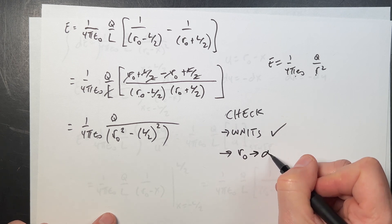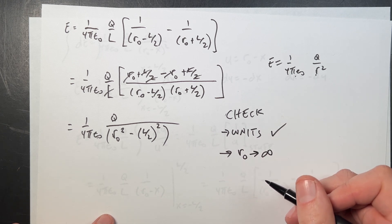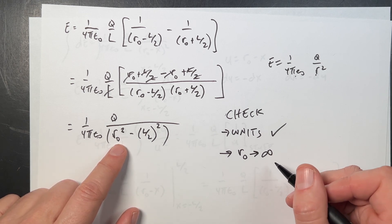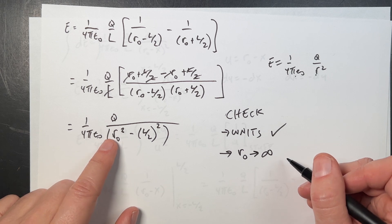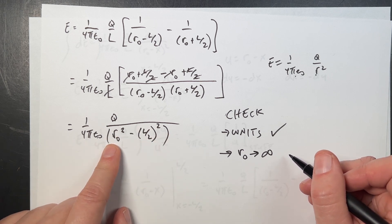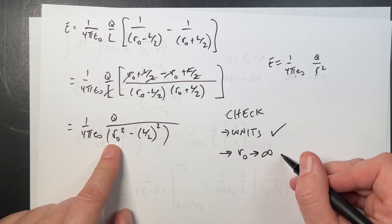r0 goes to infinity. What happens as it goes really, really far away? Well, if I get really far away, then it should look like a point charge. Or no, it should go to zero. So as r0 gets very, very big, that's a constant. So I'm dividing by a big number. So electric field goes to zero. Check.